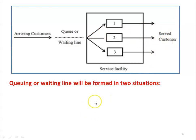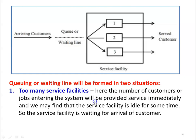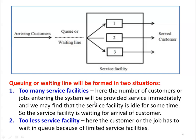Why is there a queue? A queuing or waiting line will form in two situations. First: too many service facilities — customers entering the system are provided service immediately, so the service facility is idle and waiting for customer arrival. Second: too few facilities — with limited service facilities, the customer or job has to wait in the queue. In both situations, queue formation occurs.